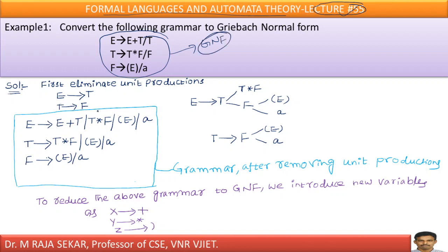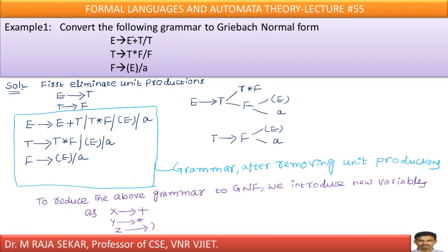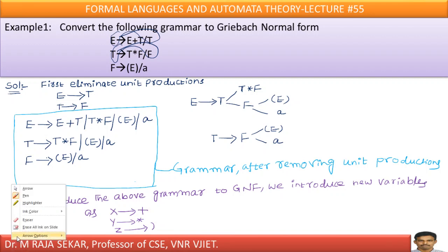First, eliminate unit productions. In this grammar, we have unit productions. Capital E goes to capital T is a unit production. Capital T goes to capital F is also a unit production. First, we will try to remove these two unit productions.